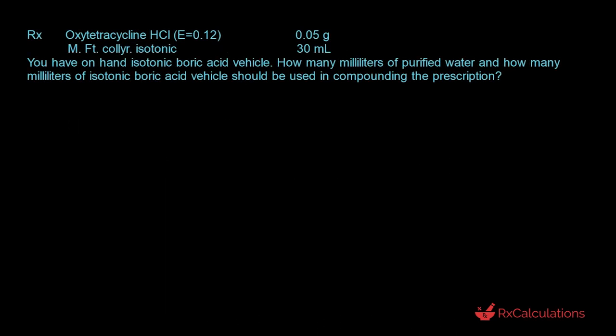One question that normally arises is: when do you actually use the White Vincent method? From the question, there are a few key phrases that will point you in the right direction — phrases like 'how many milliliters of purified water' and 'how many milliliters of isotonic vehicle or buffer.' Those are the key phrases that point you to using the White Vincent method for isotonicity calculations.